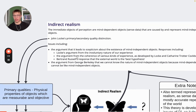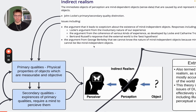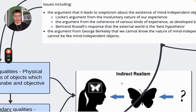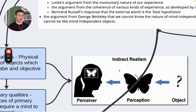Indirect realism has one more working part to it than direct realism, and that is an intermediary between the agent and the external world — sense data. Sense data is caused by and represents the external world. You can see on the diagram here how that is the case. Sense data is good because it explains away lots of the issues of direct realism. It explains why we have illusions and hallucinations, for example.